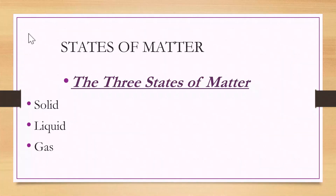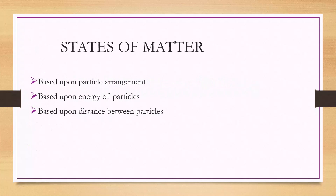Matter can exist in three basic forms, which are called solids, liquids, and gases. These are called states of matter. Characteristics that determine states of matter are the arrangement of the particles, the energy of the particles, and the distance between particles.